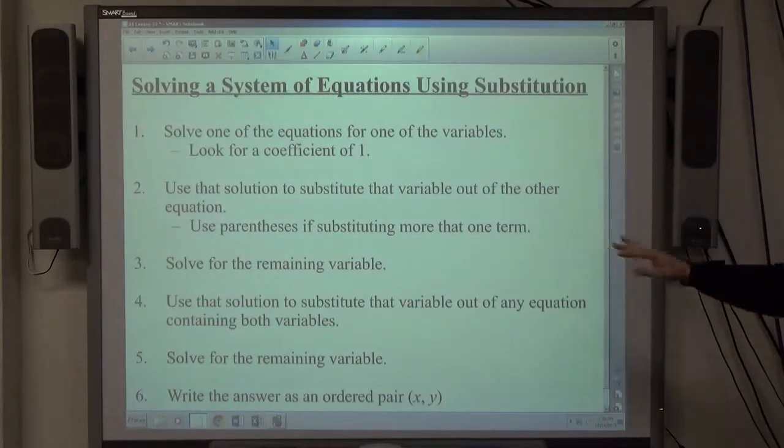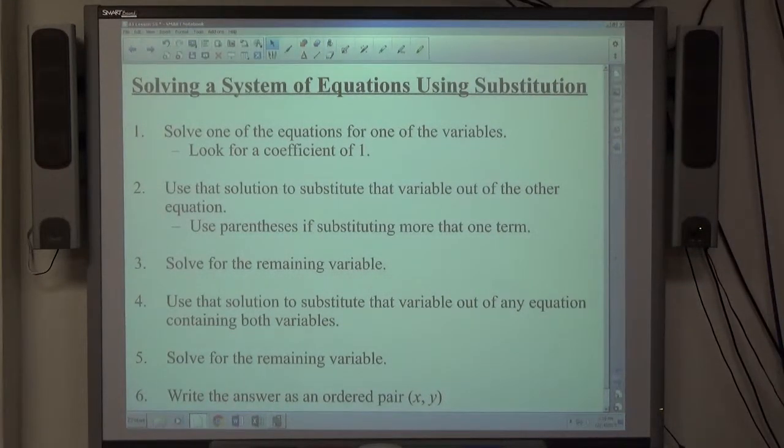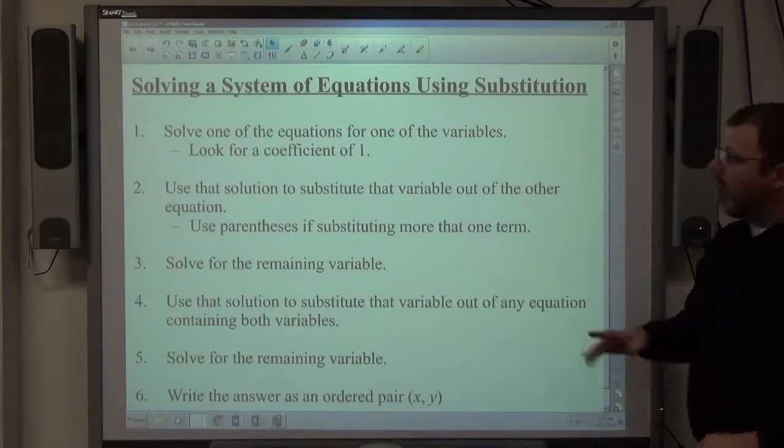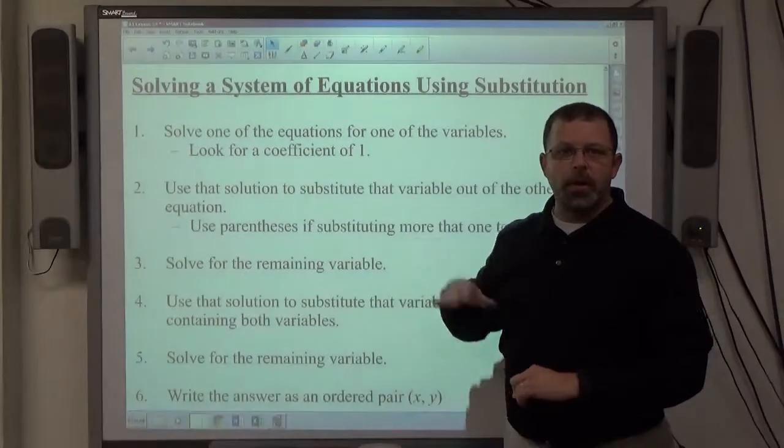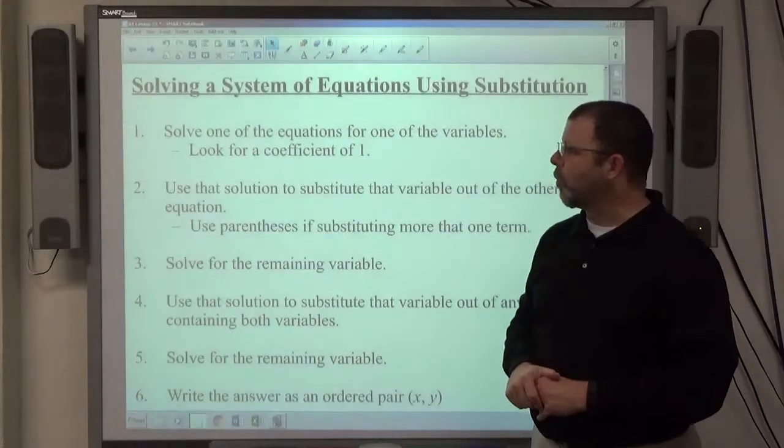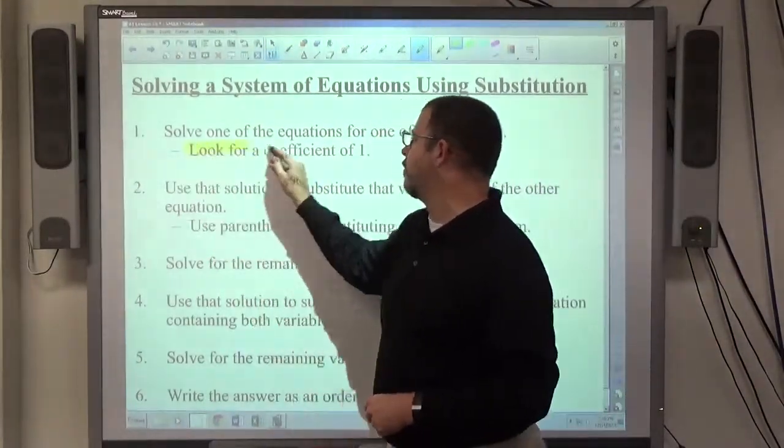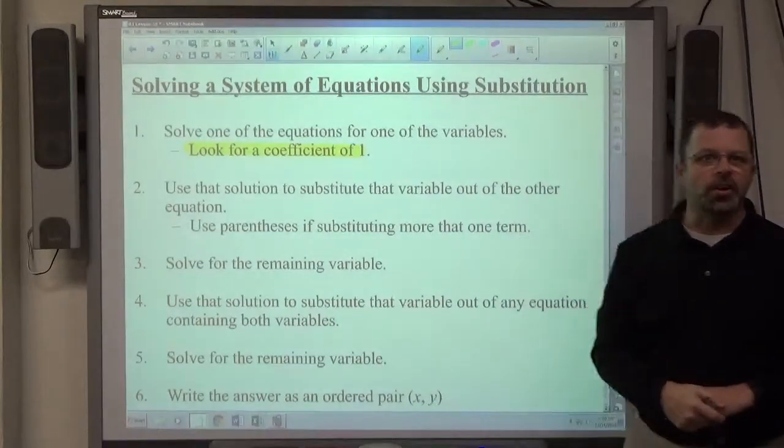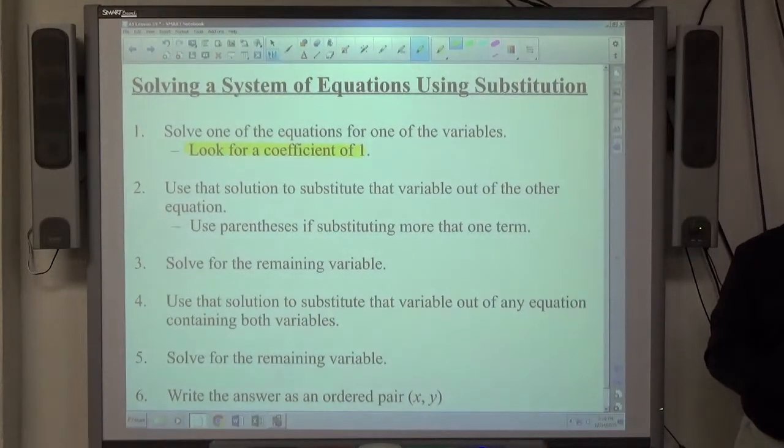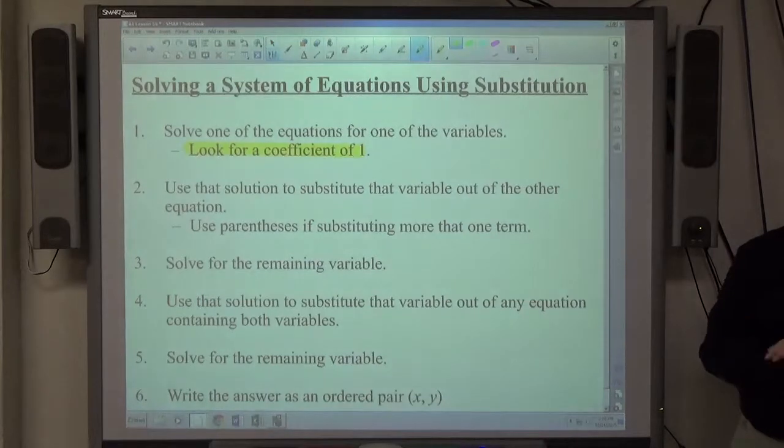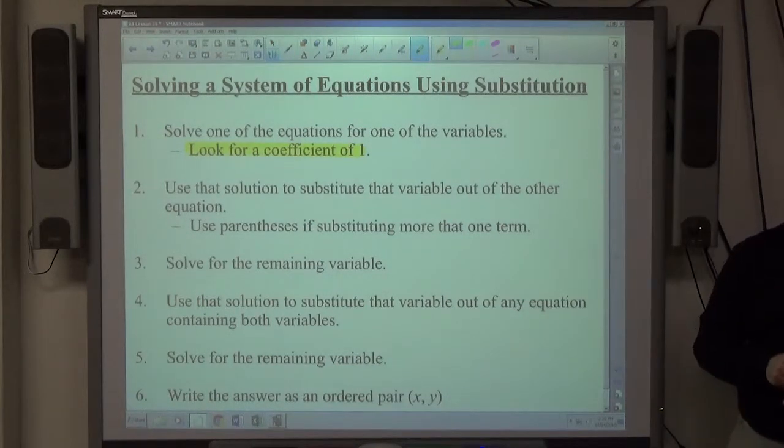For examples 1, 2, and 3, we're going to use this technique for solving a system of equations using substitution. We want to take one of the two equations that they give us and solve for one of the variables, and the key to this step is we're looking for a coefficient of 1. Just x or just y is your best friend in these problems. If you have 5x or 2y or 7y, it's more difficult. So coefficient of 1 is your best friend.